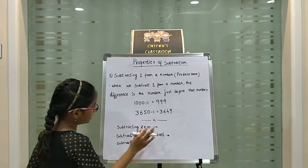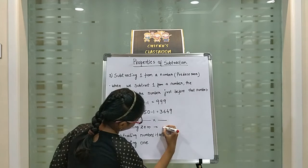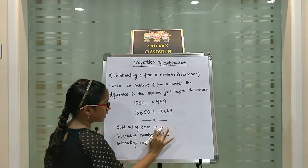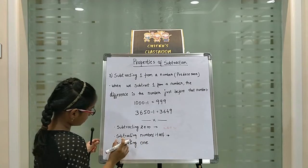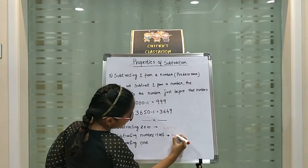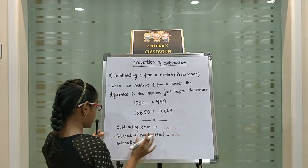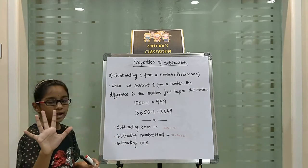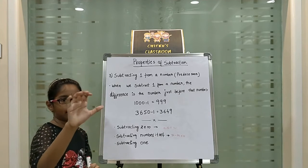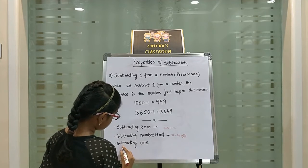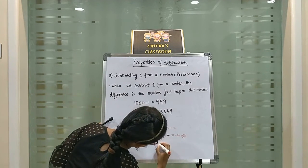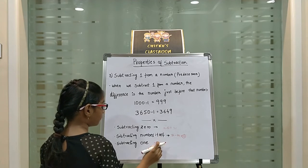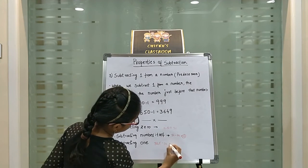Let's recap. Subtracting 0: if we subtract a number by 0, the answer will be the number itself — so 36 minus 0 is 36. Subtracting a number from itself: 36 minus 36 is equal to 0. Taking away 5 from 5 gives 0. Subtracting by 1: 365 minus 1 — the predecessor of 365 is 364. I hope you understand the properties of subtraction.